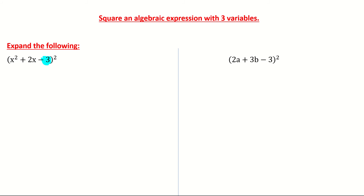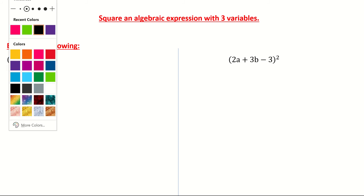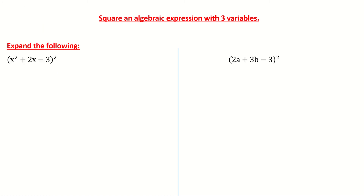The process is the same. First of all, we have to examine what the squared means. A squared means you're multiplying the term by itself. So I'm basically multiplying x squared plus 2x minus 3 by itself, which is x squared plus 2x minus 3. So I'm multiplying all of those two terms.